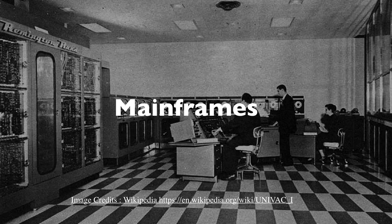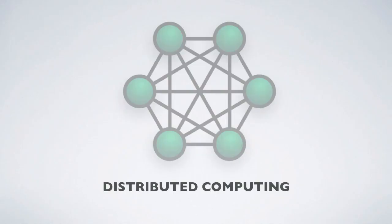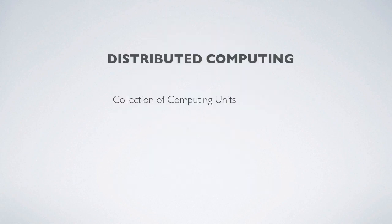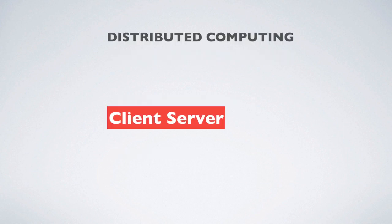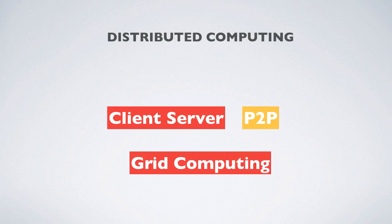These mainframes were really huge computers which were independently working — like a room full of computers — and you would need specialized people to operate them. Since they were isolated, there was no interconnection between mainframes. What started in around the 1960s and 70s was the distributed model of computing, where you would have a collection of computing units working together to provide a service. That is when the client-server model of computing started, along with peer-to-peer networking.